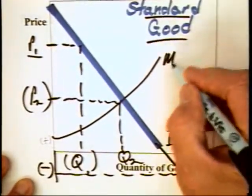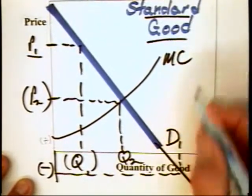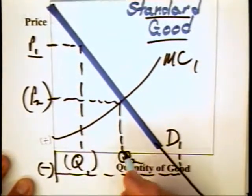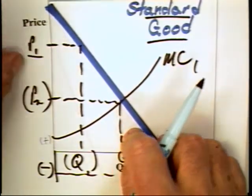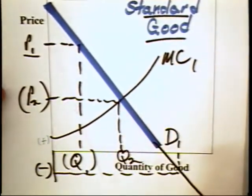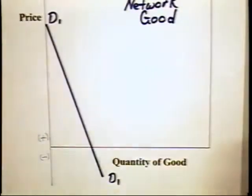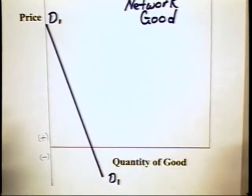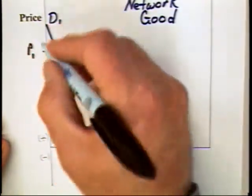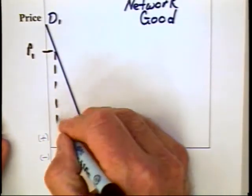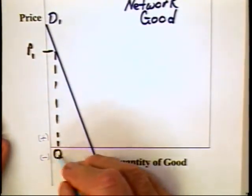For example, if the marginal cost is MC1, the appropriate price would be P2. For network goods, however, the analysis takes on a different line of argument. That is, in a network good, you can have a price of P1, and with that price, you can have a quantity that is going to be demanded.